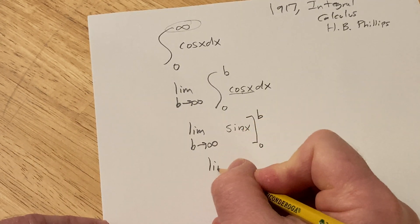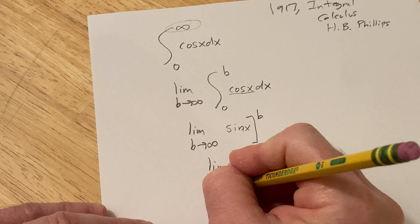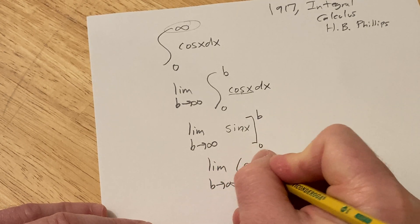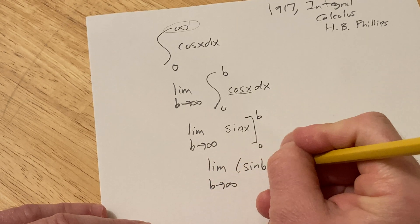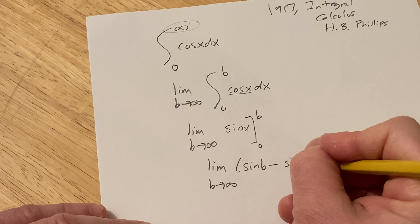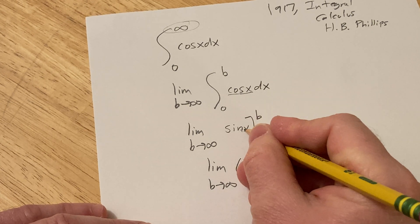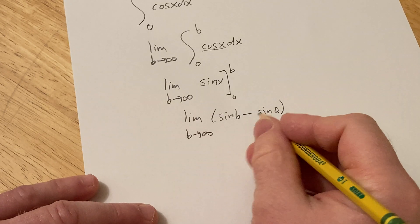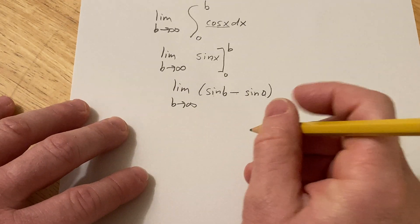So first you plug in the B. So this is the limit as B approaches infinity of the sine of B, minus and then sine of zero. So you plug in the B, subtract, plug in the zero. Sine of zero is zero. And then this here, we have to think about this.